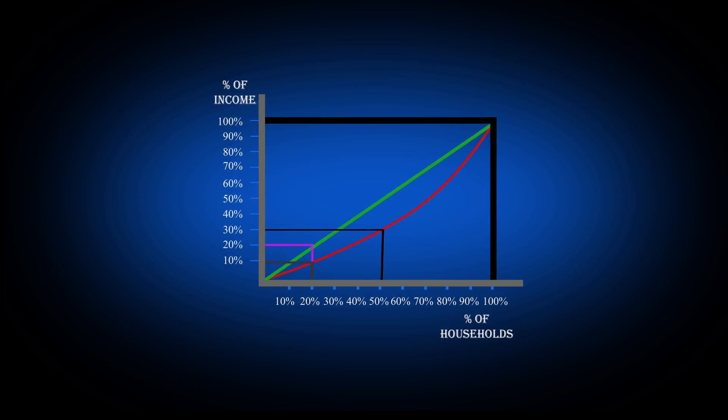90% of the population holds about 80% of the income, while the richest 10% of the households holds about 20% of the income.